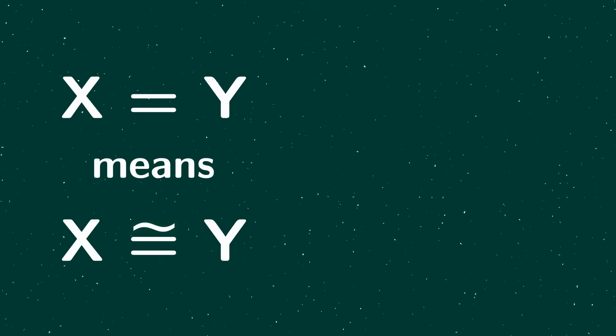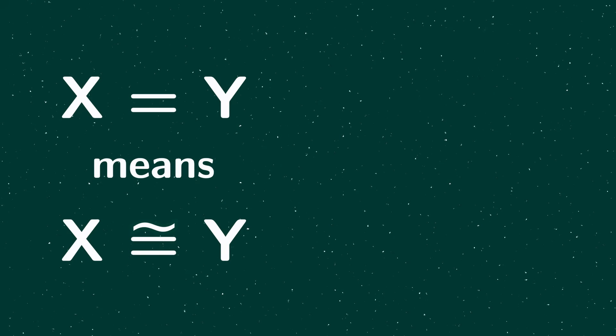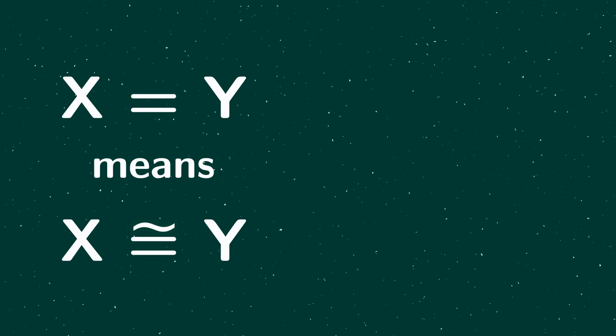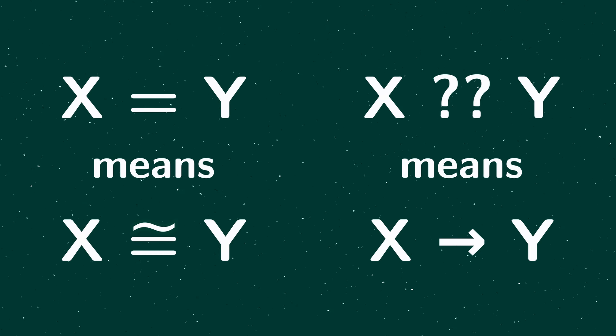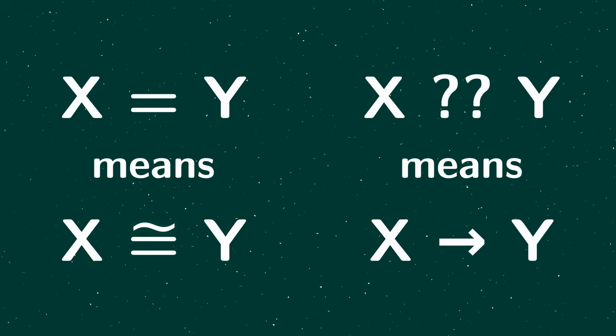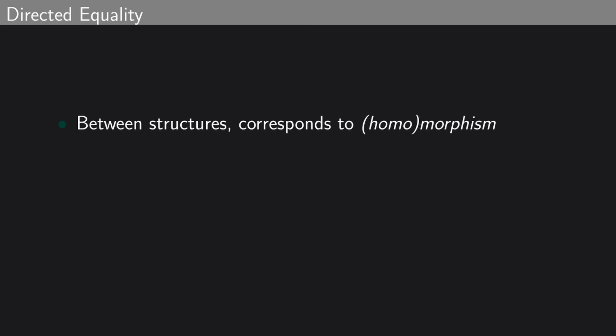So the question I'm answering is this. If equality of structures corresponds to isomorphism, then what relationship corresponds to homomorphism? The answer is some kind of directed equality. That is, equality with a direction. Usual equality is undirected or symmetric. If X equals Y, then Y equals X. Crucially, directed equality need not be symmetric. X could be directed equal to Y, but Y not directed equal to X. Because directed equality is supposed to correspond to homomorphisms, and there could be a homomorphism from X to Y, but none from Y to X.